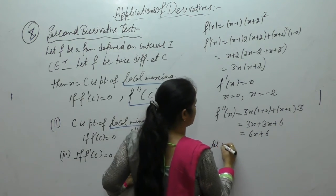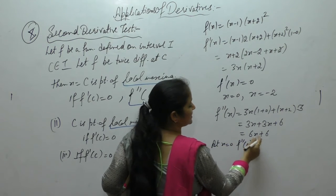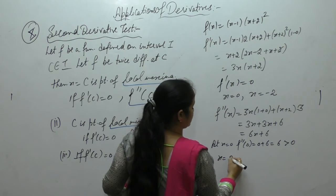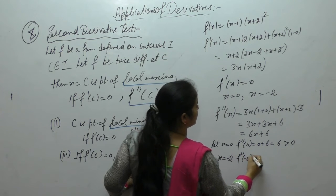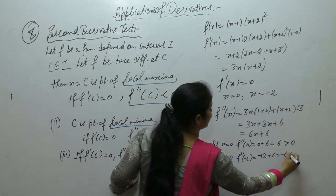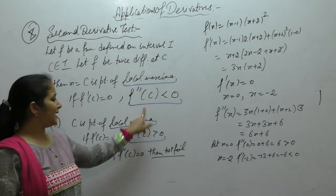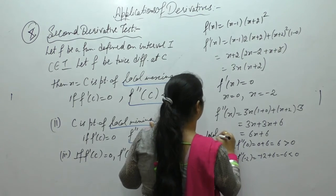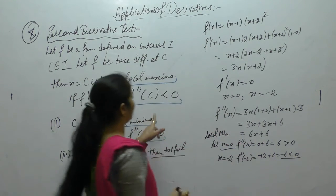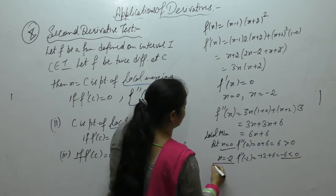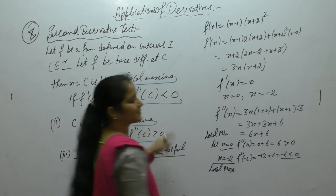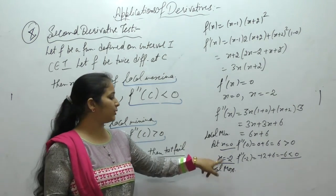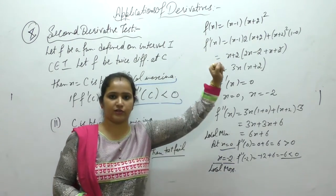At x = 0: f''(0) = 6(0) + 6 = 6 > 0, so x = 0 is a point of local minima. At x = -2: f''(-2) = 6(-2) + 6 = -6 < 0, so x = -2 is a point of local maxima. You can now find the local maximum and minimum values by substituting x = 0 and x = -2 into the given function.